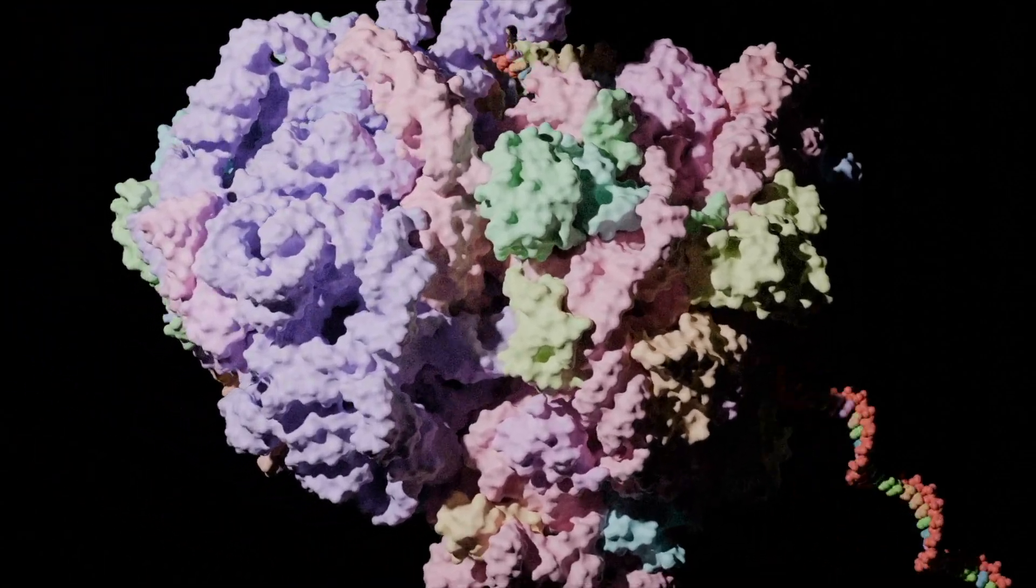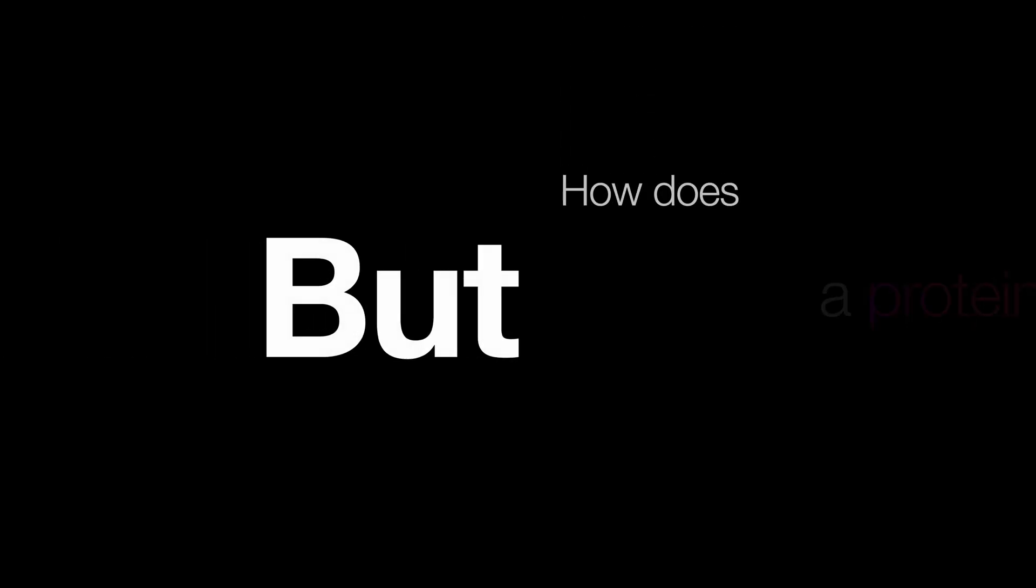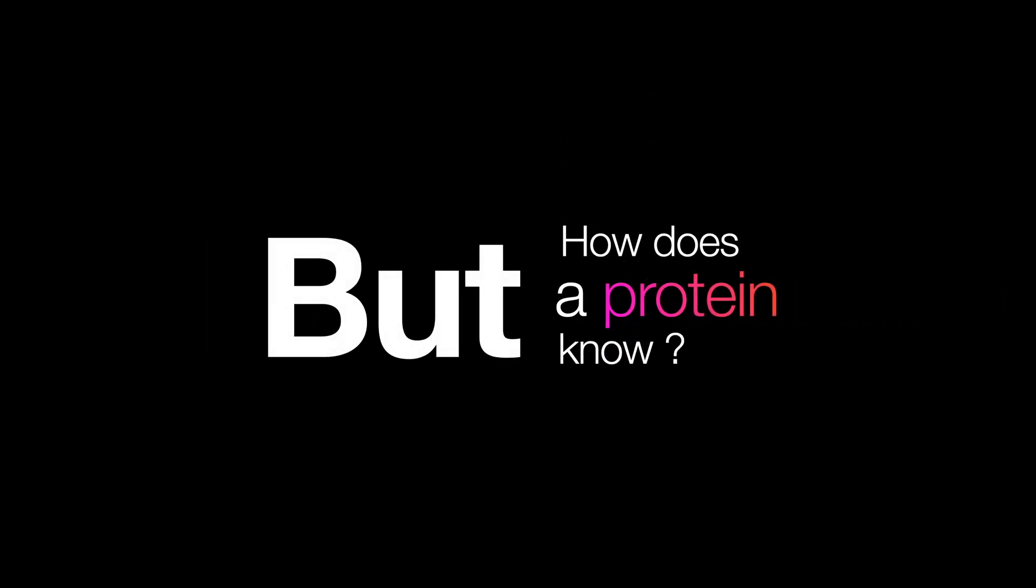Once the proteins are made, they fold into structures depending on the sequence. But how do they do this? How do they know what the right structure is? How do they retain their shape without any physical tethers?